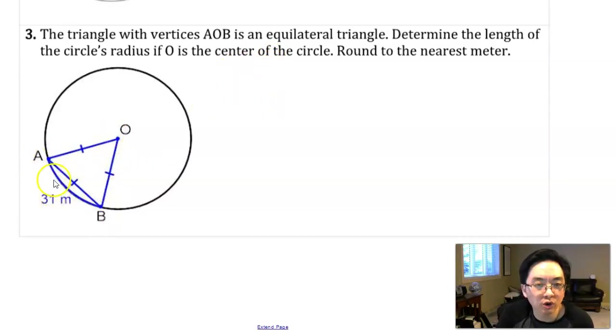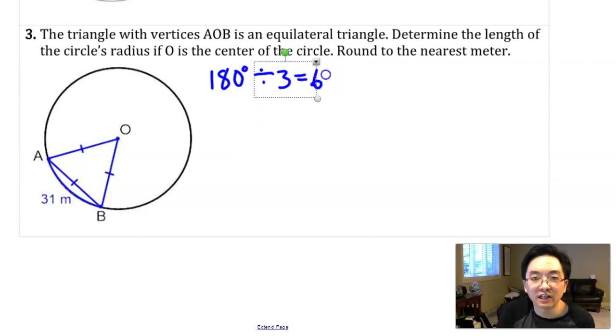The triangle with vertices AOB is an equilateral triangle. Determine the length of the circle's radius if O is the center of the circle, round to the nearest meter. It's an equilateral triangle, and their angles are equal. If you remember the sum of the angles in any triangle is 180 degrees, then you can go 180 degrees divided by 3 angles, and that gives you each angle is 60 degrees. So this central angle is 60 degrees.